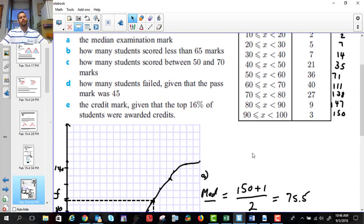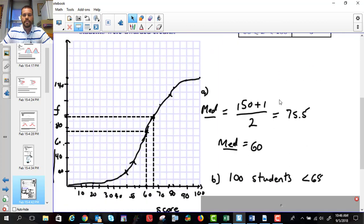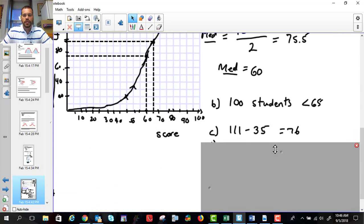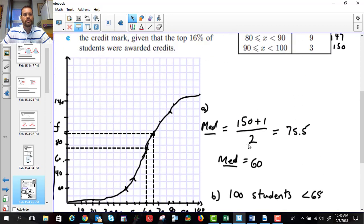Number C says, how many students scored between 50 and 70? This one's a little different because you can actually look at it right here. Here's 50, there's 35. And here's 70, there's 111. And we know that directly from our table, so we don't have to look at the graph. And if we do 111 minus 35, it's 76. So that's our answer for that one.